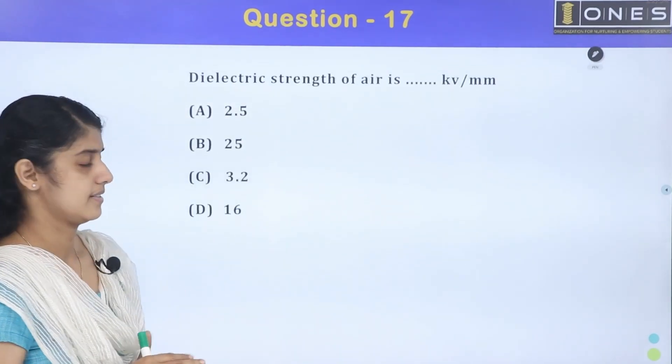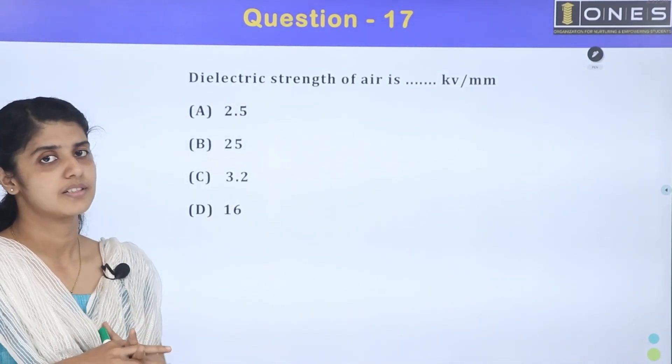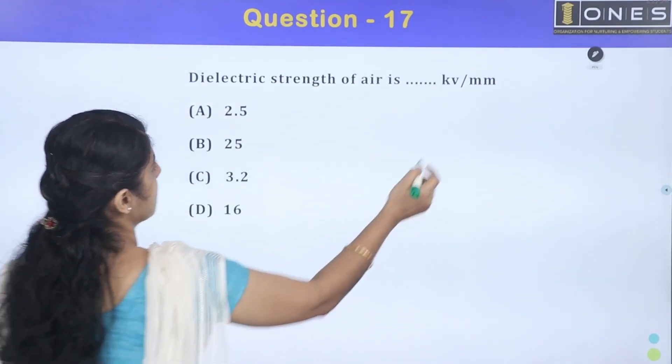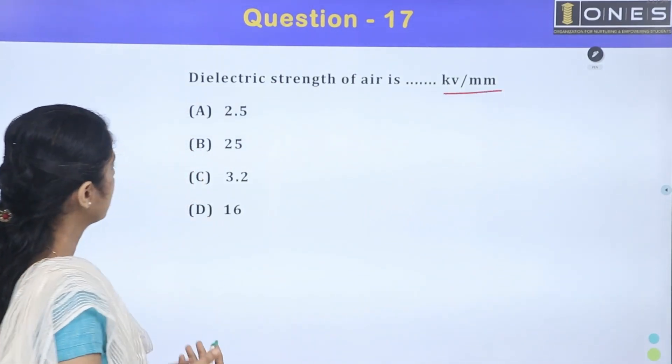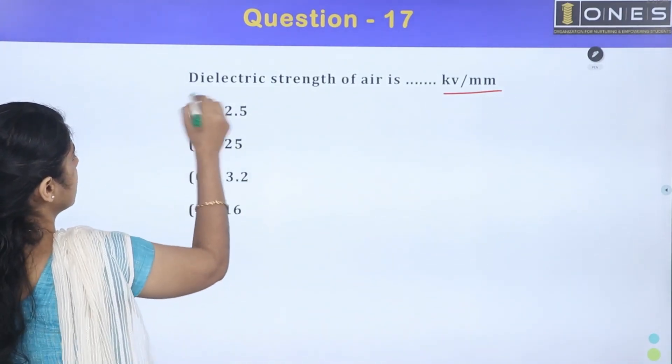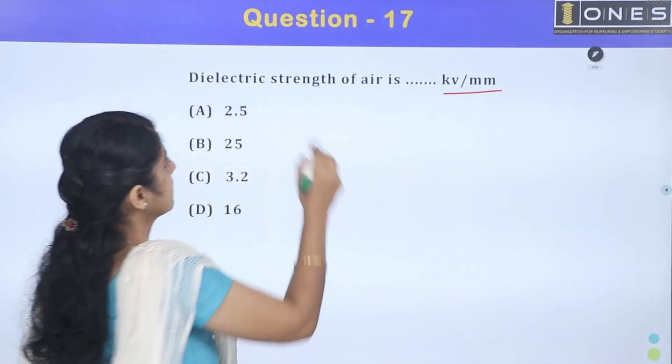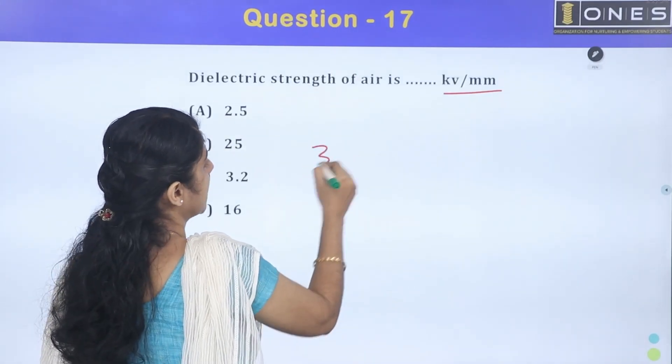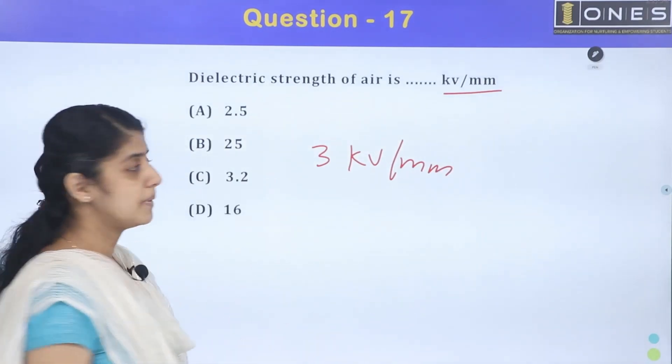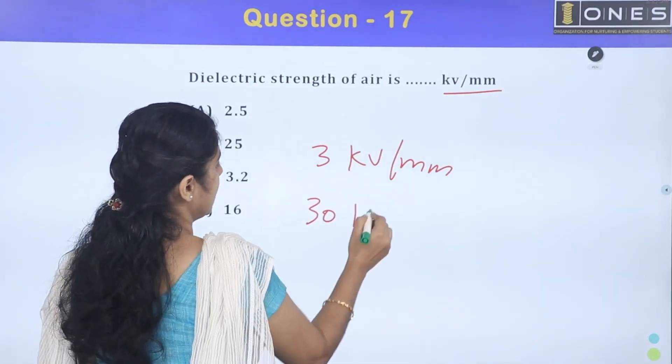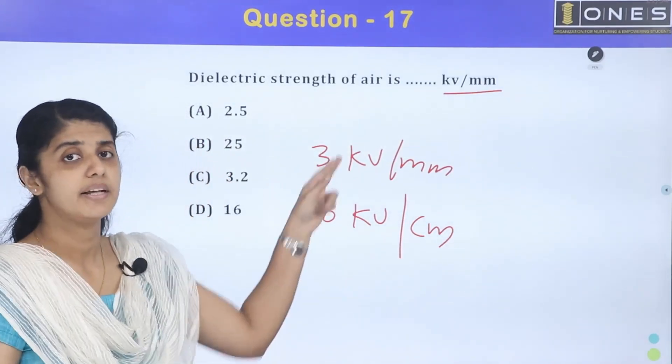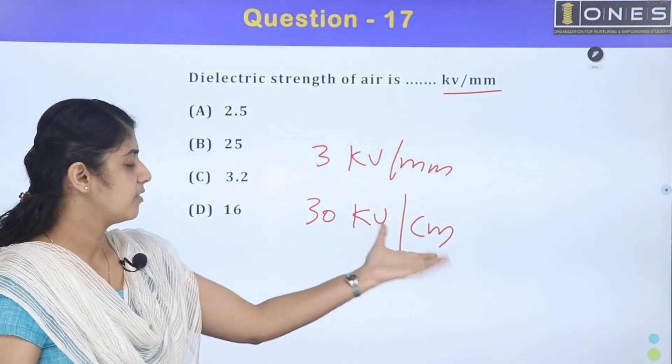The dielectric strength of air is what? KV per mm. There is no option, there is no answer. The answer is that the dielectric strength of air is 3 KV per mm. In centimeters, it is 30 KV per centimeter.